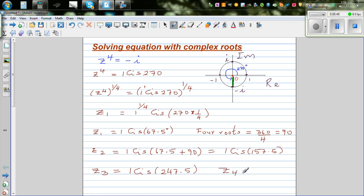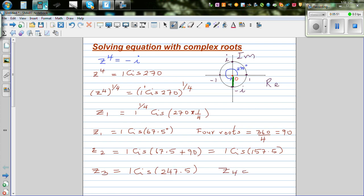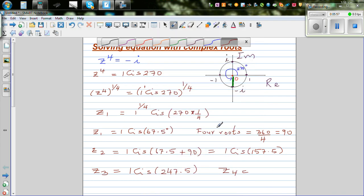And your z4 would be 247.5 plus 90, which is 337.5. So this is 1 cis 337.5. You can write this in radians.